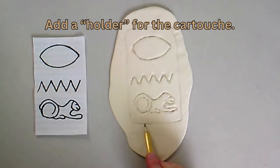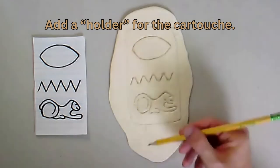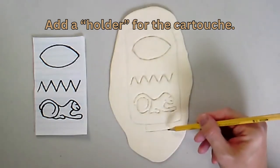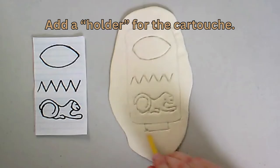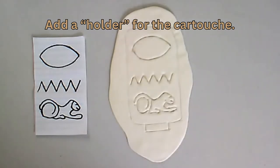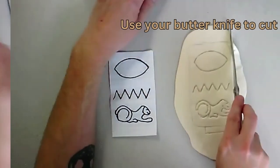And then right here at the bottom, cartouche has always had this kind of holder. And I'm also going to be adding to the bottom there. Once I have my cartouche drawn out, I can use my butter knife to cut away the pieces.